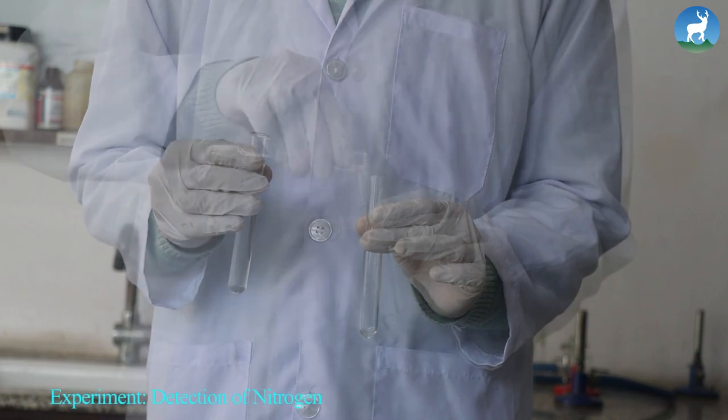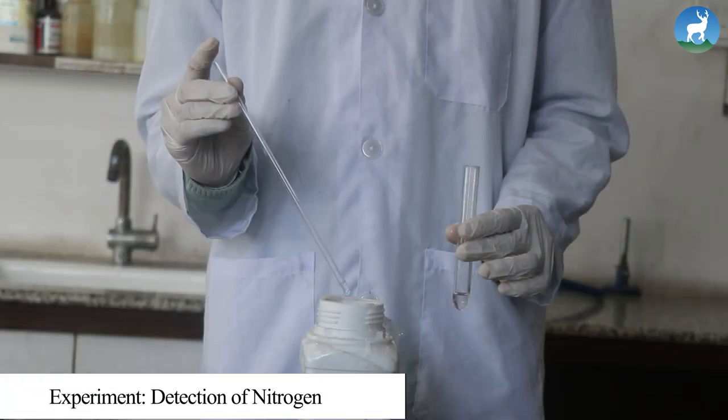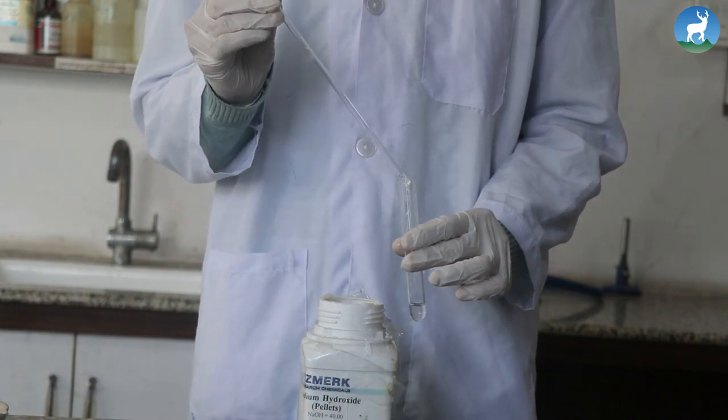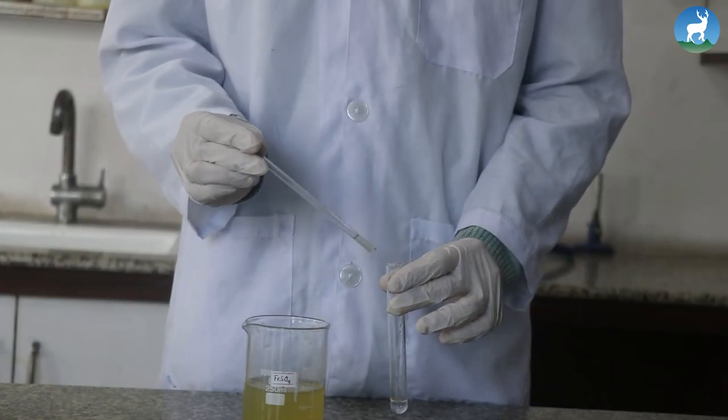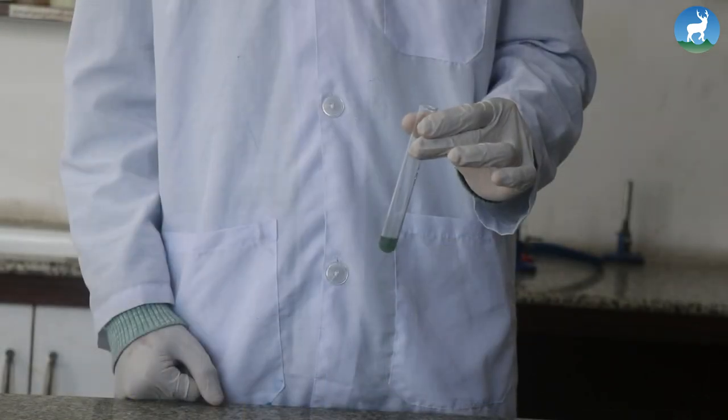Detection of nitrogen: Take 1 to 2 ml of sodium extract in a test tube. Make the solution alkaline by adding few drops of aqueous sodium hydroxide. Add few drops of freshly prepared ferrous sulfate solution. A dirty green precipitate is obtained.